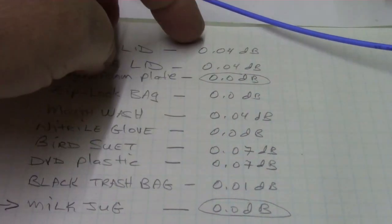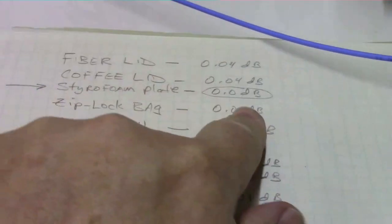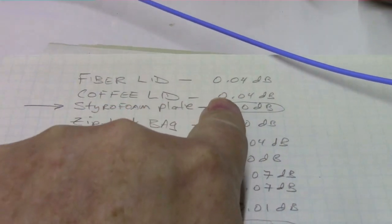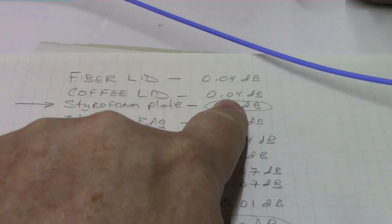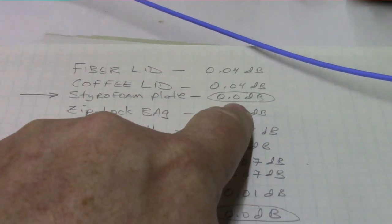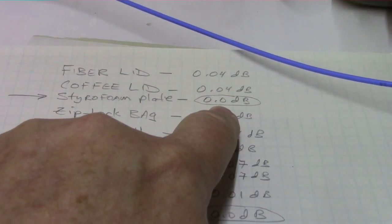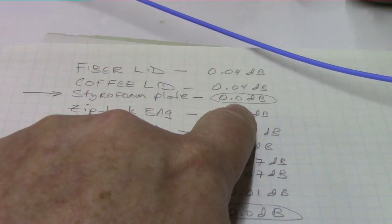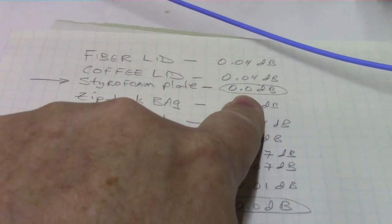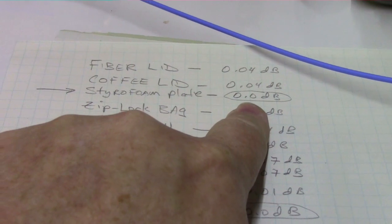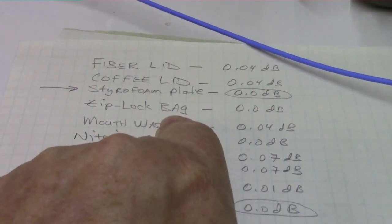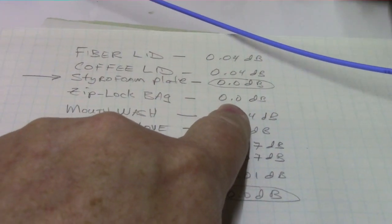The fiber lid was about 0.04 dB insertion loss. The coffee can lid, also about 0.04. The styrofoam plate, measured it twice, just not detectable. I didn't detect any loss whatsoever in this particular setup. Just 0 dB. The Ziploc bag, also was 0 dB.